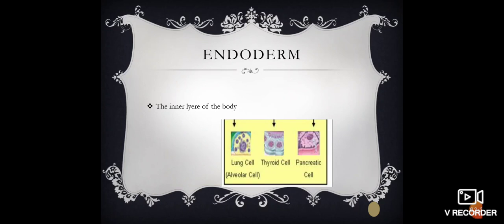Finally, talk about endoderm. They form inner layer of the body. They lining lung cells, thyroid, and pancreatic cells.